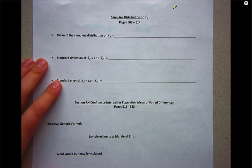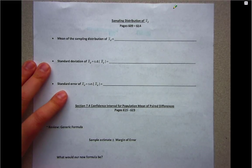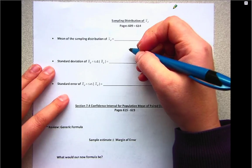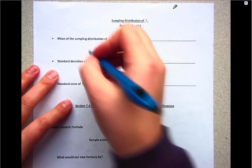In the last video we looked at some descriptive statistics for paired data. Now we're going to look at sampling distribution information. This is what ultimately helps us to make our inferences for this type of data.